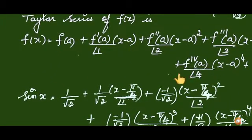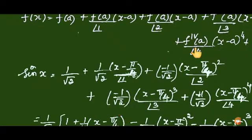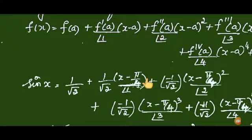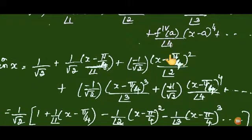Substituting into the formula: f of a is 1 by root 2; f dash of a is 1 by root 2 times (x minus pi by 4); f double dash of a is minus 1 by root 2 times (x minus pi by 4) squared by 2 factorial; f triple dash of a is minus 1 by root 2 times (x minus pi by 4) cubed by 3 factorial; and f fourth of a is 1 by root 2 times (x minus pi by 4) to the power 4 by 4 factorial, and so on.